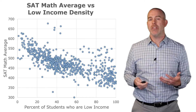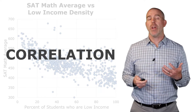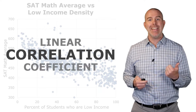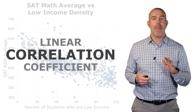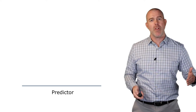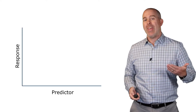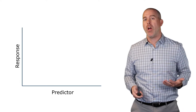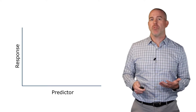What we're looking at here is called the correlation. Specifically, we're going to quantify it with something called the linear correlation coefficient. We'll talk more about what that means. Let me talk a little bit about this graph — it's a scatterplot with the predictor variable along the X axis and what we think it will predict, the response variable, along the Y axis.